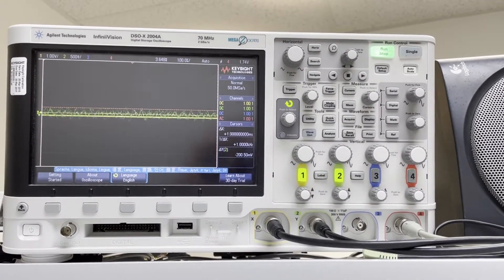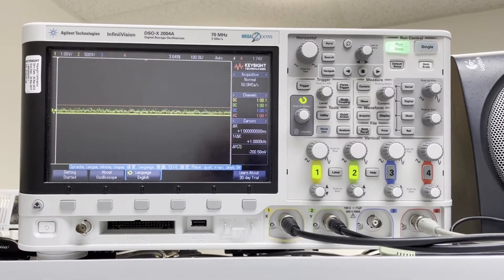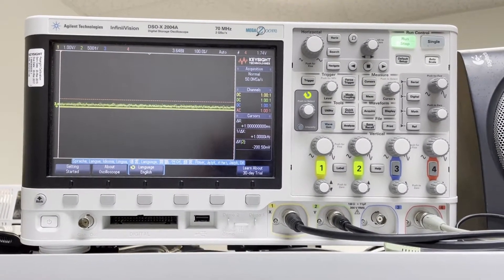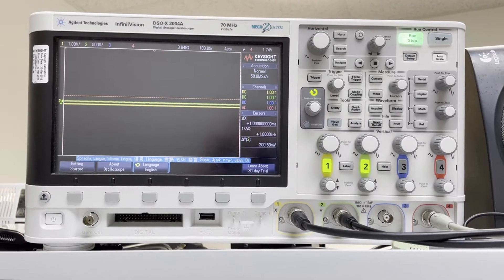Perfect, so we now have an offset lock with the D2-135, but to get an offset phase lock we'll need to adjust the gain a little bit.